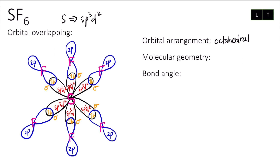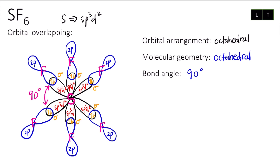The molecular geometry for SF₆ stays the same as the orbital arrangement — we have octahedral — because there is no lone pair on the central atom. The bond angle is 90 degrees. To label the bond angle, I take from sigma to sigma — for example from here to here — so from here to here is 90 degrees. That's settled for the orbital overlapping for SF₆.